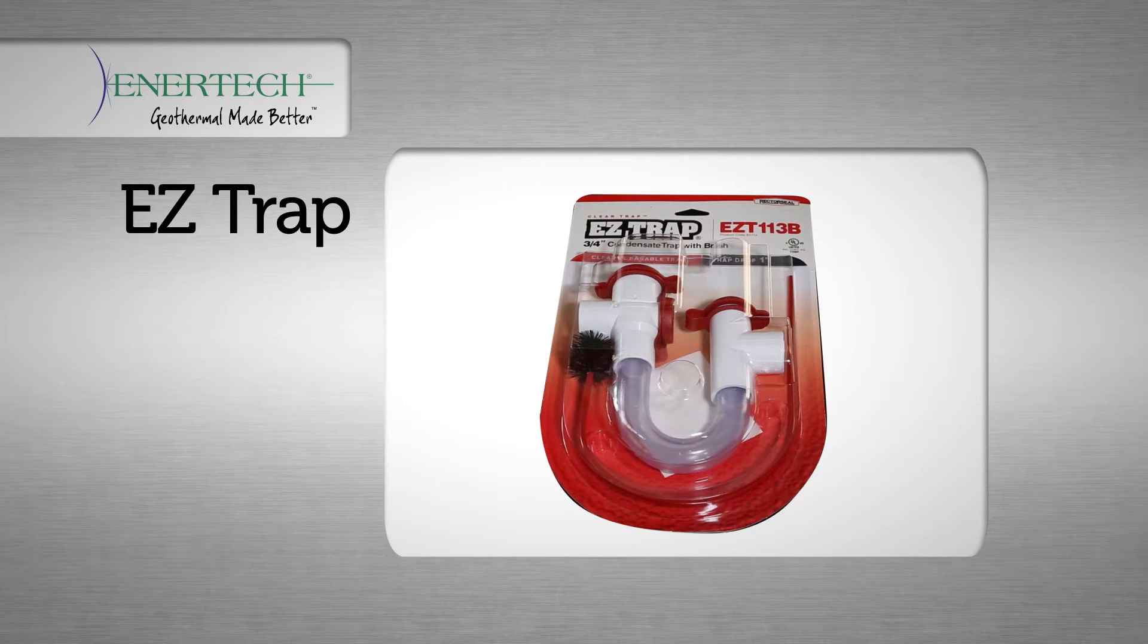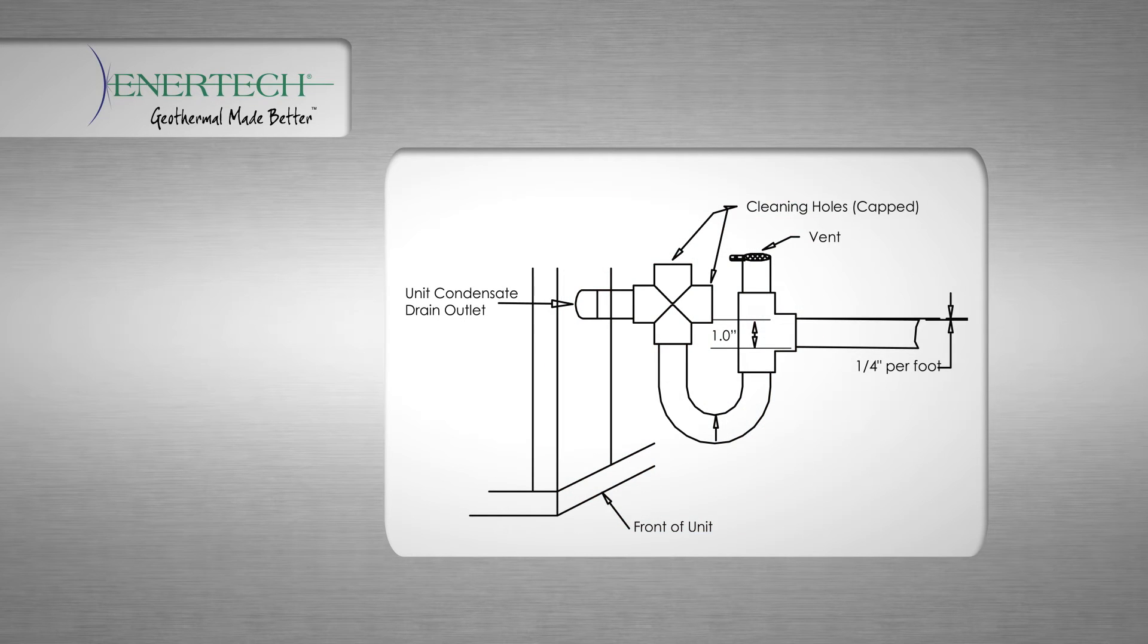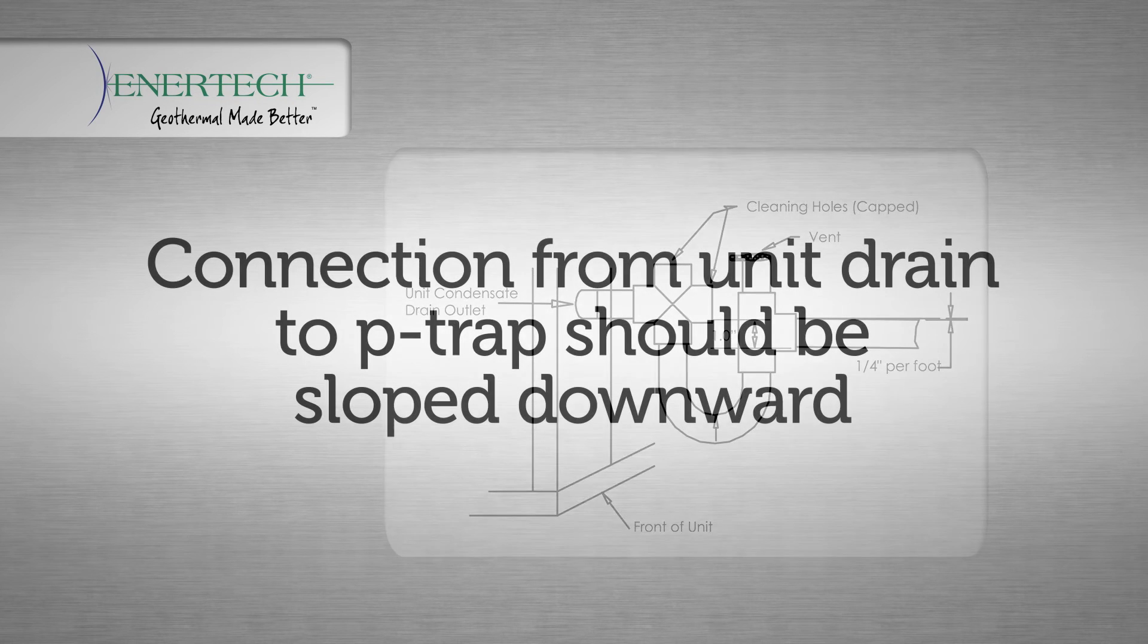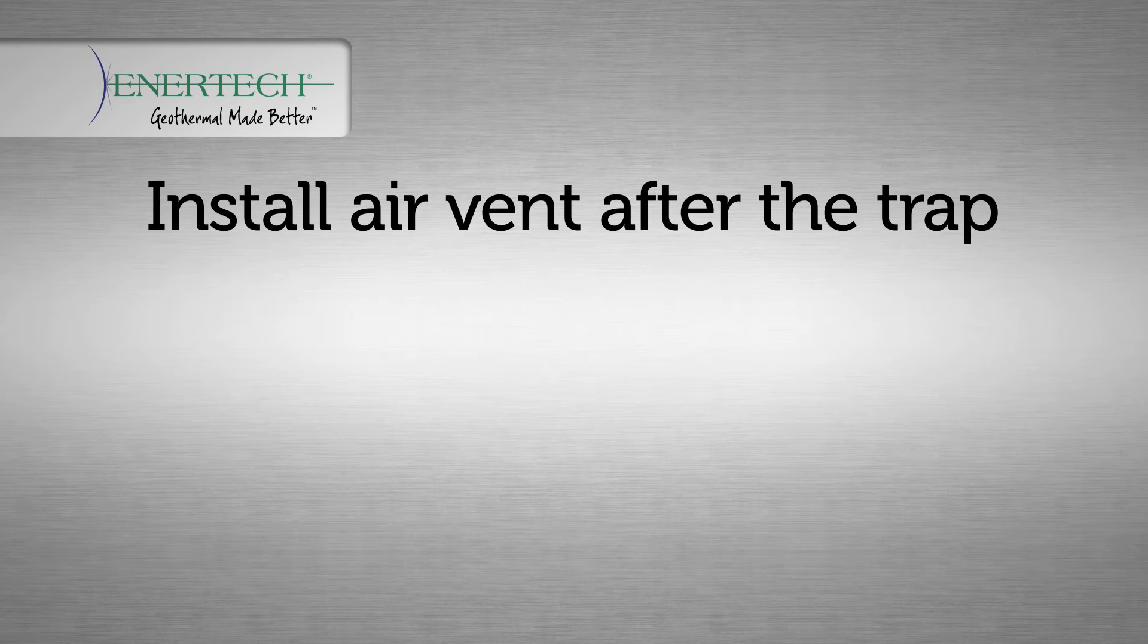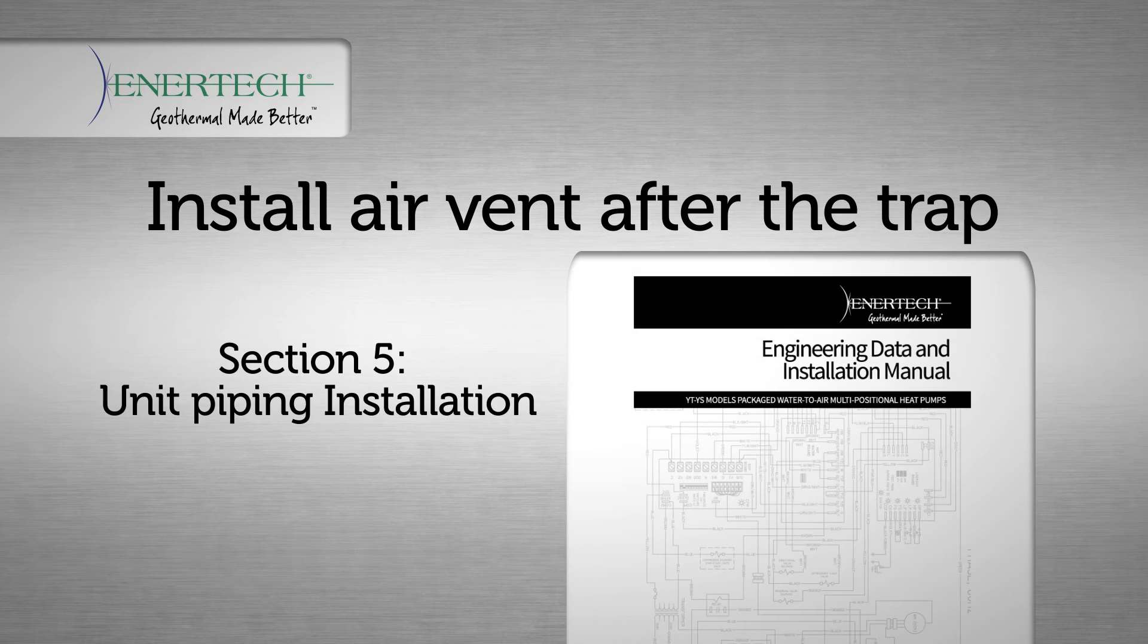Complete the drain installation by connecting a P-trap to the equipment condensate drain connection. The condensate line must be trapped a minimum of one inch as shown in the diagram. The condensate line should be pitched away from the unit a minimum of one quarter inch per foot. The condensate line from the unit drain connection to the P-trap should be sloped downward. Always install the air vent after the trap.